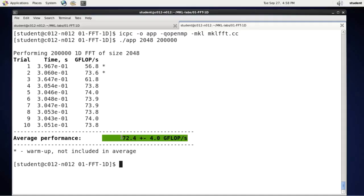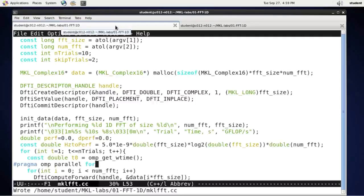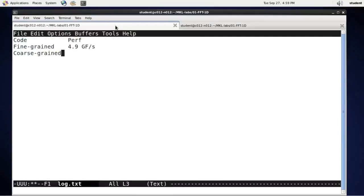So let's see how my application is doing. It has finished, and now I'm measuring 72 gigaflops per second. Not bad for one line of code change.